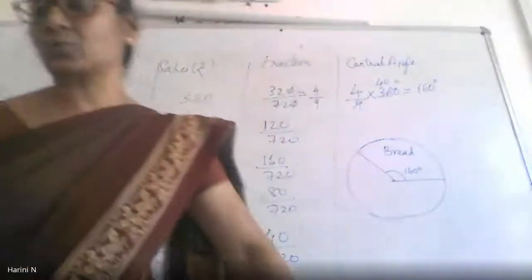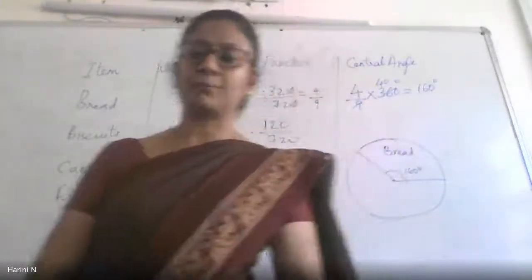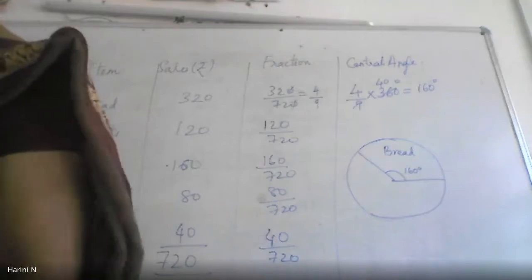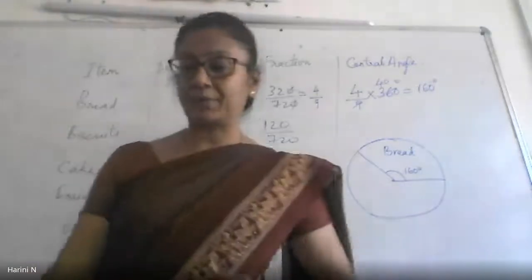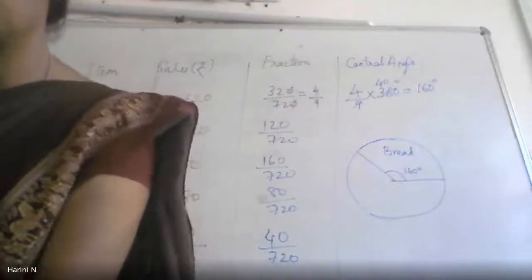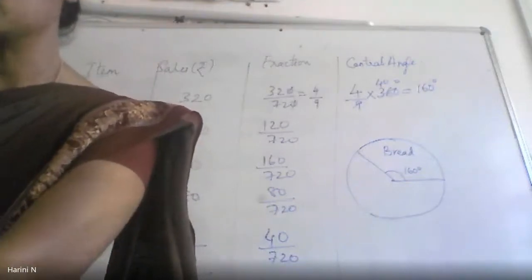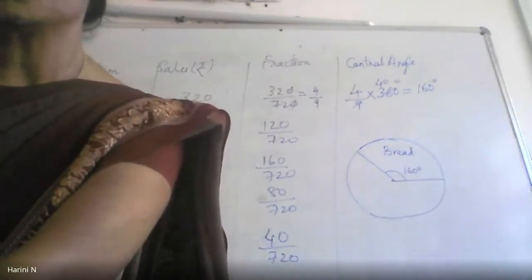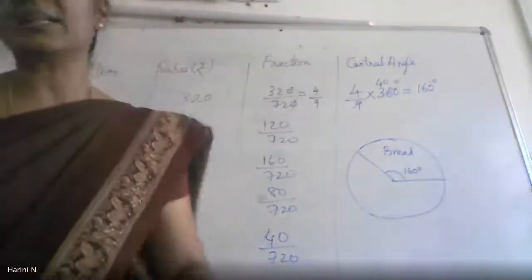The 3-mark question in this chapter should probably be from the histogram and the polygon. Look at page number 76 in Exercise 5.1. There are data given about shoppers who come to a departmental store — man, woman, boy, and girl. The question asks you to make a frequency distribution table using tally marks and draw a bar graph.